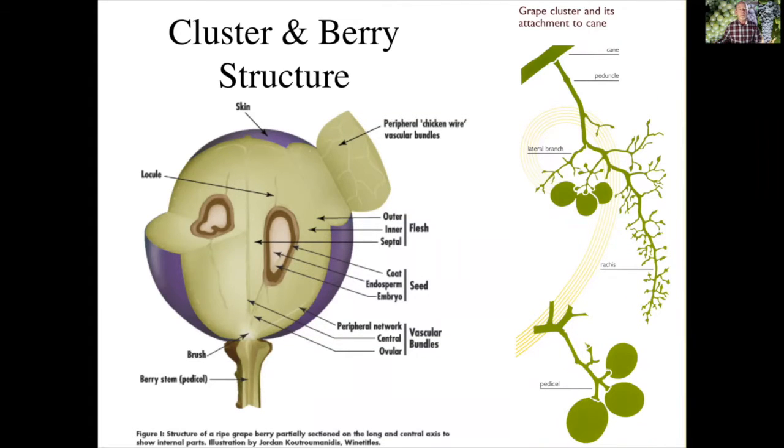At a mature state, our berry would look something like this with several different parts to it. The skin or epidermis on a red grape would be red, and the flesh inside or the pulp would normally be white, although there are some varieties that have a red flesh. In addition, we would have a couple of seeds in here normally, just two, but there can be more or less depending on fertilization as we discussed in the previous video.